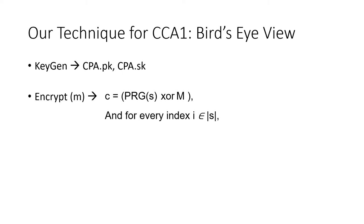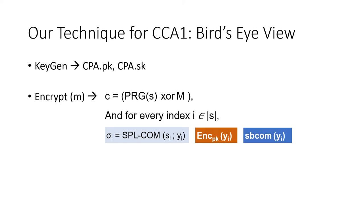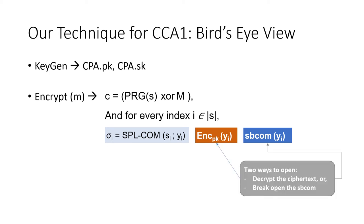The rest of the ciphertext components are generated as follows. Say the seed s is n bits long; for every index i in [n], we compute a special commitment to the seed. In addition, we encrypt the opening of this commitment twice: once using the CPA encryption scheme and another time using a general-purpose statistically binding commitment. The reason we do this is that encryption using the CPA scheme and committing using the statistically binding commitment gives us two ways to open any given ciphertext — one by decrypting the orange part using the secret key, and the other by brute-forcing the statistically binding commitment.